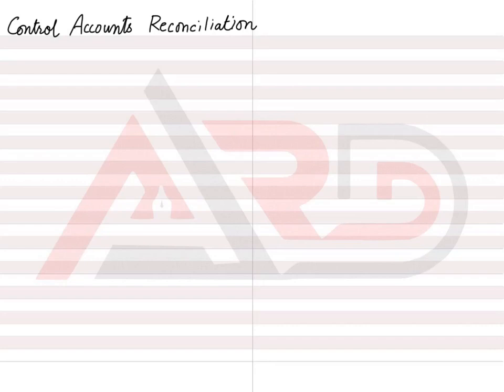My dear students, this is ARD, your accounting coach, and the topic I brought for you today is control account reconciliation. Before going through reconciliation, you must go through my basic concepts topic for control accounts — what a control account means, what is a sales ledger control account, and what is a purchase ledger control account. If you have already gone through those basic concepts, you may now move further into control account reconciliation, which is basically part of AS level accounting.